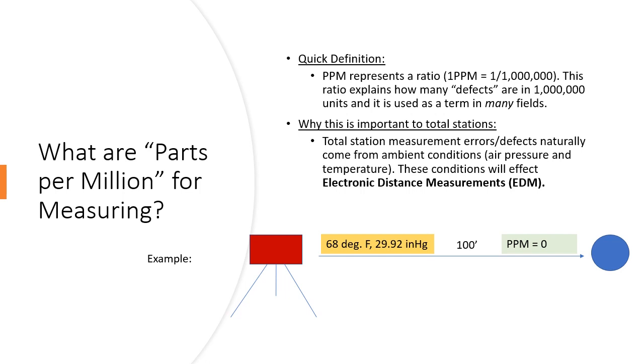Okay, so 100 feet is the distance from the total station to that object. And now let's say I go back. I set the total station up the same exact way but my ambient conditions have changed and they've changed as follows.